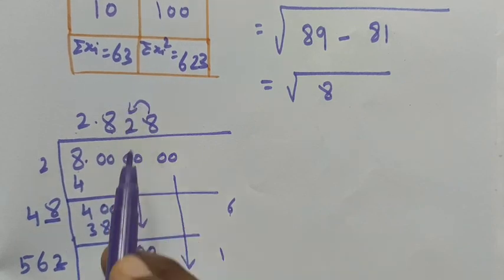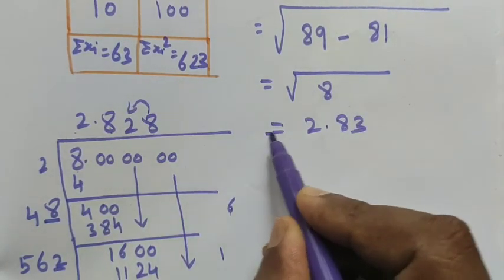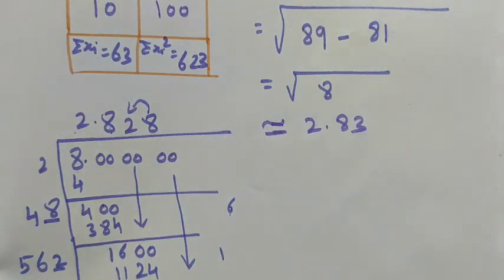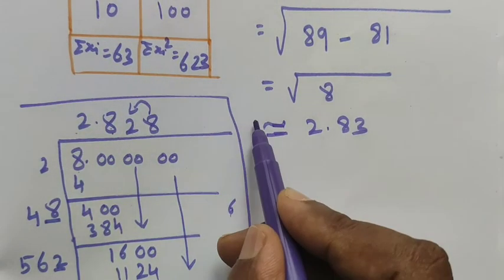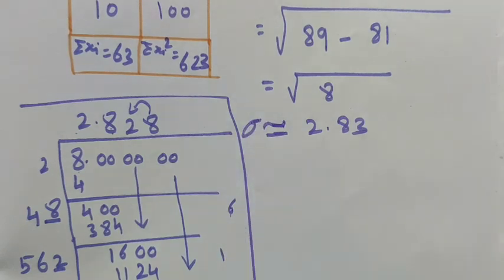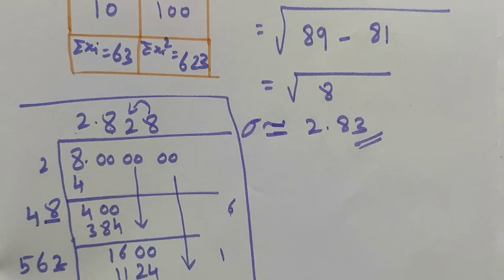So we add one number, so we get 2.83 approximately. The standard deviation is approximately 2.83 is the value. Thank you students, thanks, thank you.